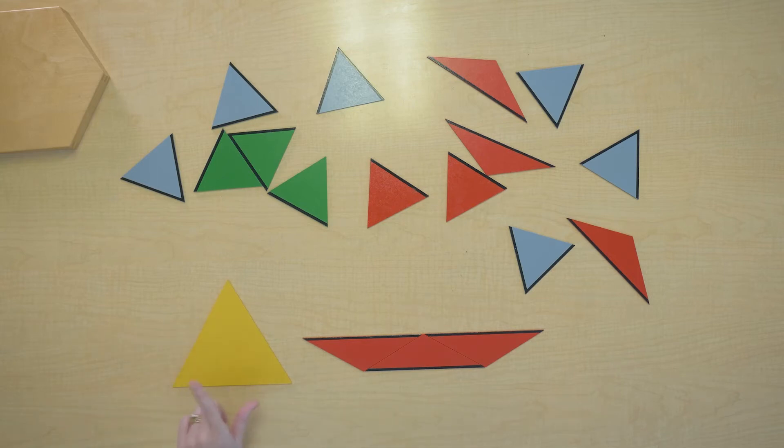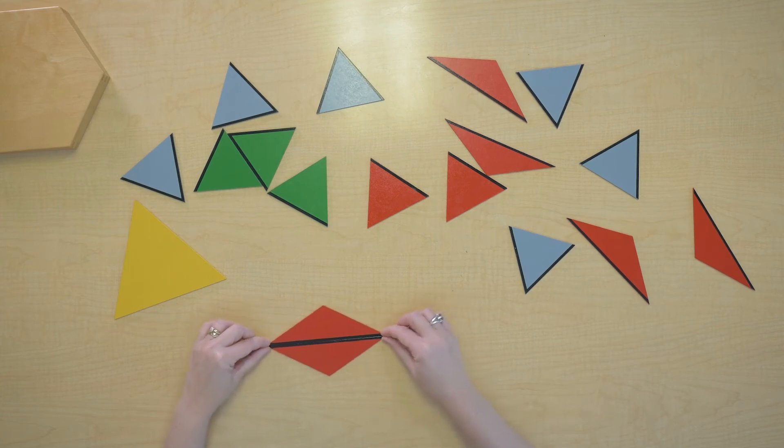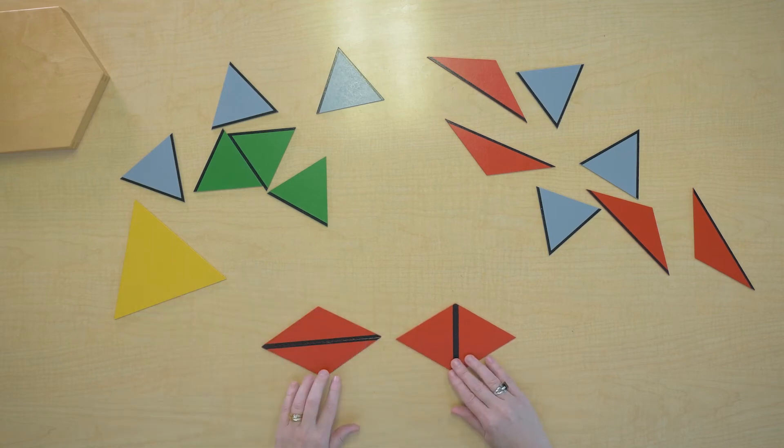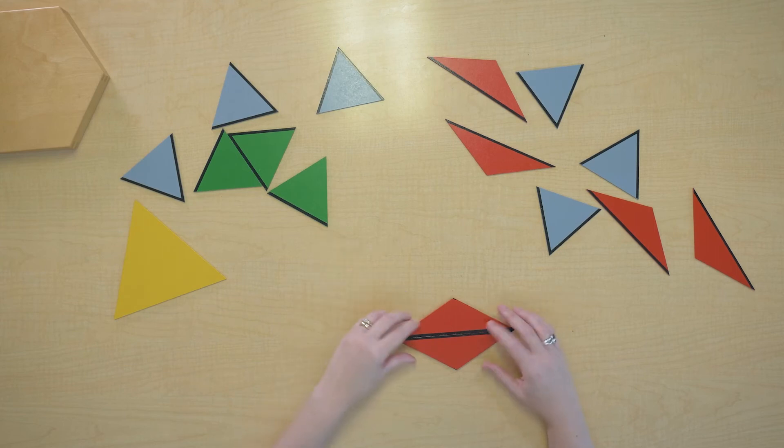Now I want to show you something else in this box. If I make this rhombus right here and I make a rhombus out of these two equilateral triangles, these two rhombuses are equivalent. They take up the same amount of space and have the same value.